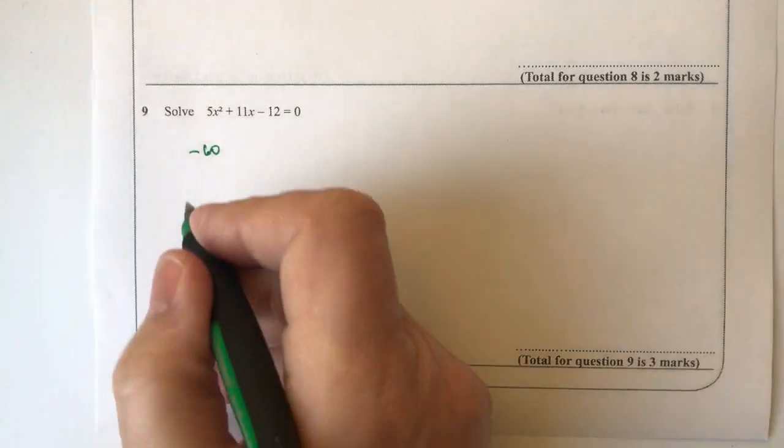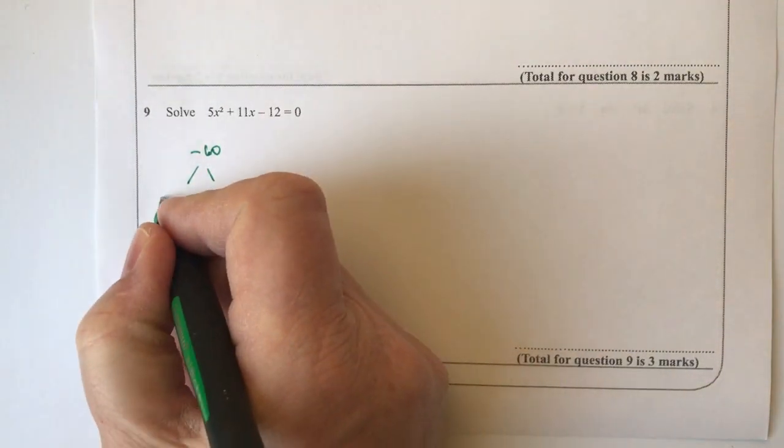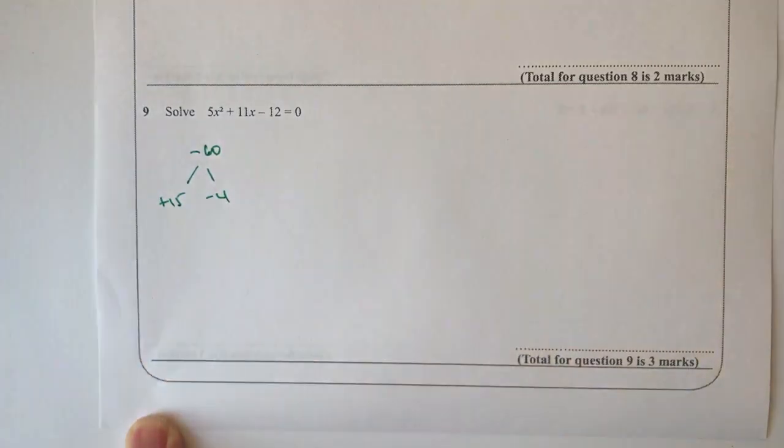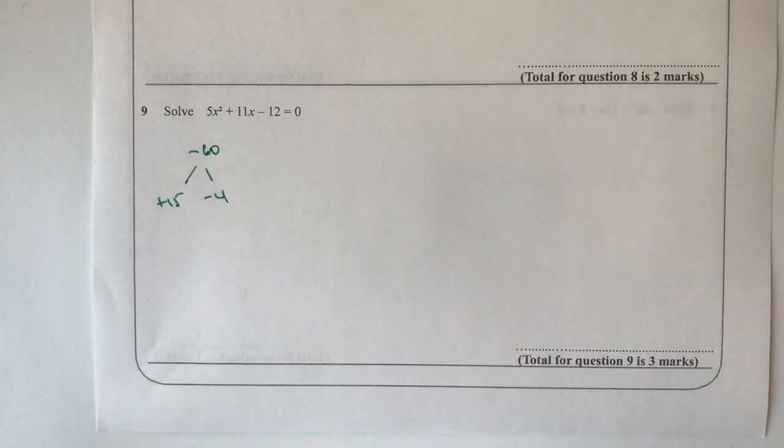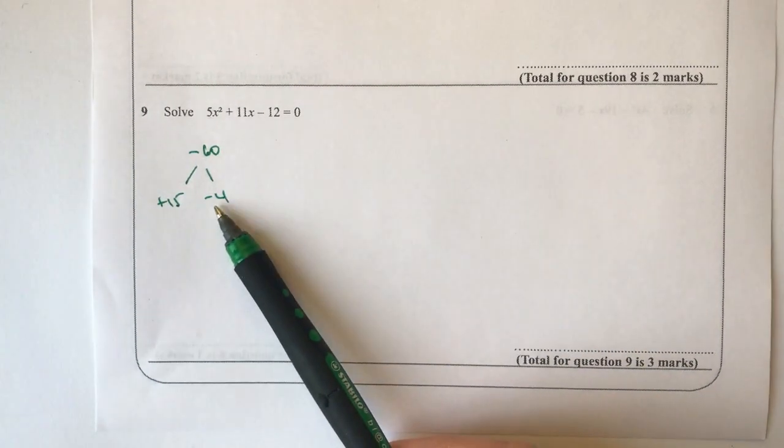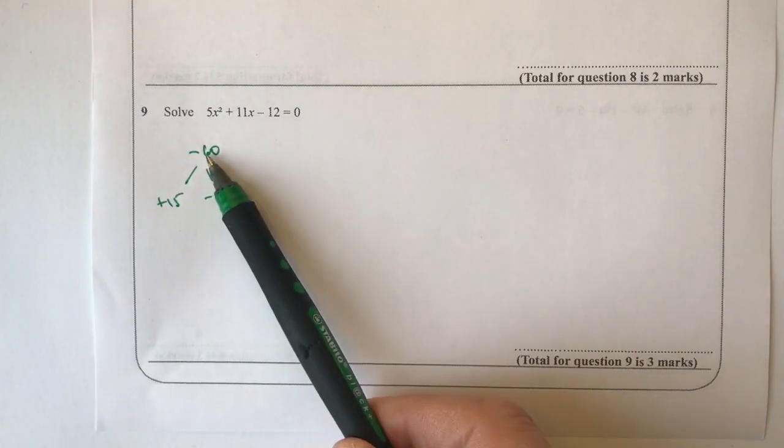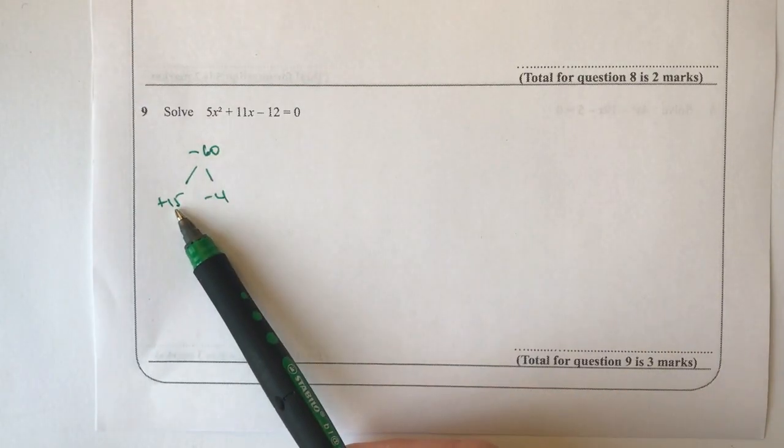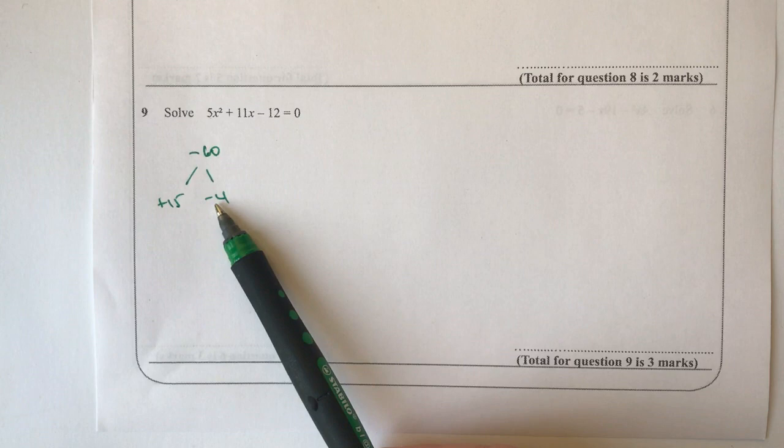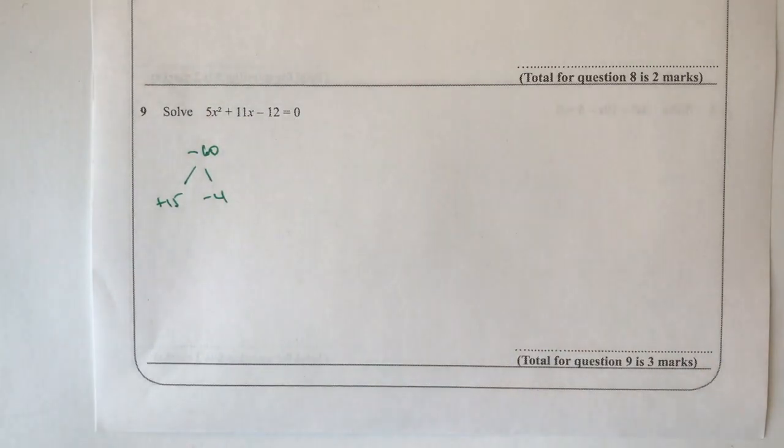Well, you'll see what I mean if I write those in. I'm going to use plus fifteen and minus four because when I multiply fifteen and minus four together I get minus sixty, and when I add fifteen and minus four together I get plus eleven. Okay, I hope that's alright for you. This particular one does take a little bit of thinking through.